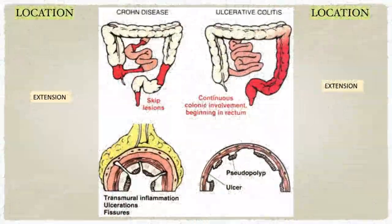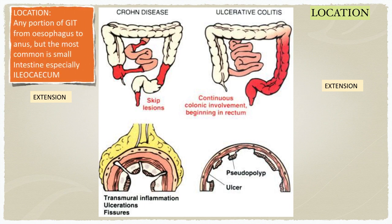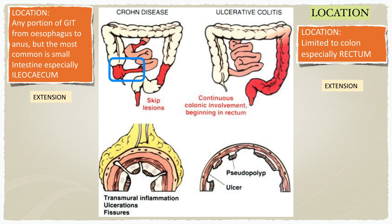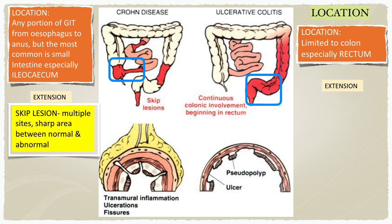This picture is the most important to summarize the different pathology and morphology between Crohn's disease and ulcerative colitis. We can classify the difference into location and extension of the disease. Crohn's disease is located at any portion of the GI tract from esophagus to anus, but the most common is at the ileocecum. Crohn's disease is a skip lesion — multiple areas involved in segmental distribution with sharp demarcation between normal and abnormal areas.